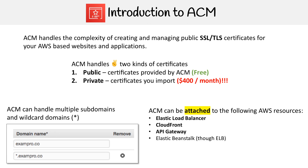ACM is attached to very specific AWS services and resources. You can attach it to Elastic Load Balancer, CloudFront, API Gateway, and apparently Elastic Beanstalk — though I imagine that's through the ELB. Those are the three services you need to know that ACM attaches to, so remember that.